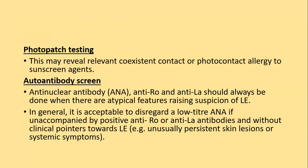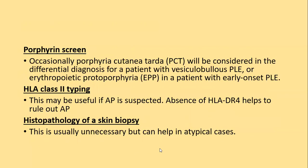Photo patch testing may reveal relevant coexisting contact or photocontact allergies to sun-screening agents or other agents. Antibody screening: antinuclear antibody, anti-Ro and anti-La should always be done when there are typical features suspicious of LE. A low-titre ANA can be disregarded if unaccompanied by positive anti-Ro and anti-La antibodies without other clinical pointers towards LE, such as persistence of rash beyond three weeks. Porphyrin screening is sometimes required to rule out PCT. HLA class II typing is useful for actinic prurigo; absence of HLA-DR4 helps to rule out actinic prurigo. Histopathology of skin biopsy is usually unnecessary but helpful in atypical cases.